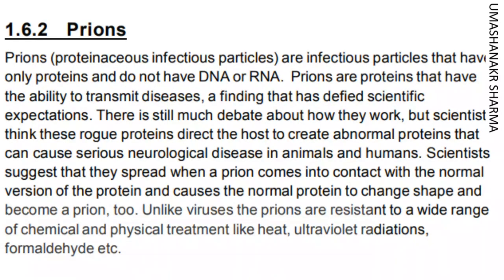Prions, proteinaceous infectious particles, are infectious particles that have only proteins and do not have DNA or RNA. Prions are proteins that have the ability to transmit diseases, a finding that has defied scientific expectations. Scientists think these rogue proteins direct the host to create abnormal proteins that can cause serious neurological disease in animals and humans. They spread when a prion comes into contact with the normal version of the protein and causes it to change shape and become a prion too. Unlike viruses, prions are resistant to a wide range of chemical and physical treatments like heat, ultraviolet radiation, and formaldehyde.